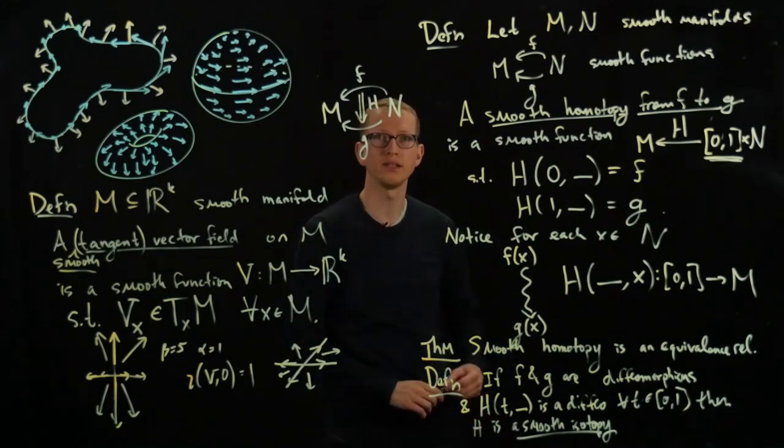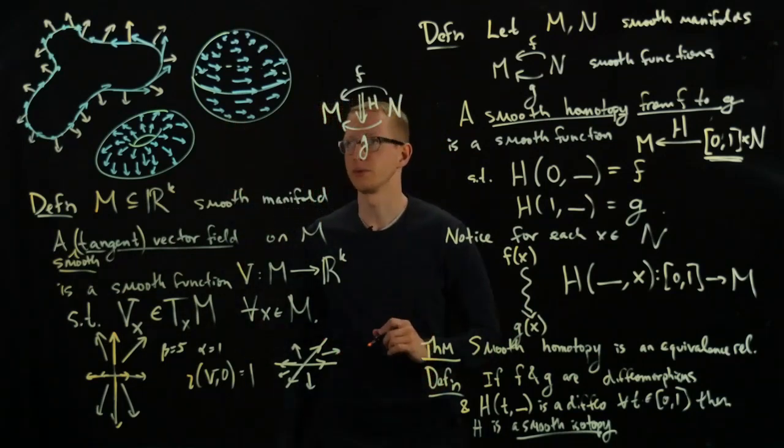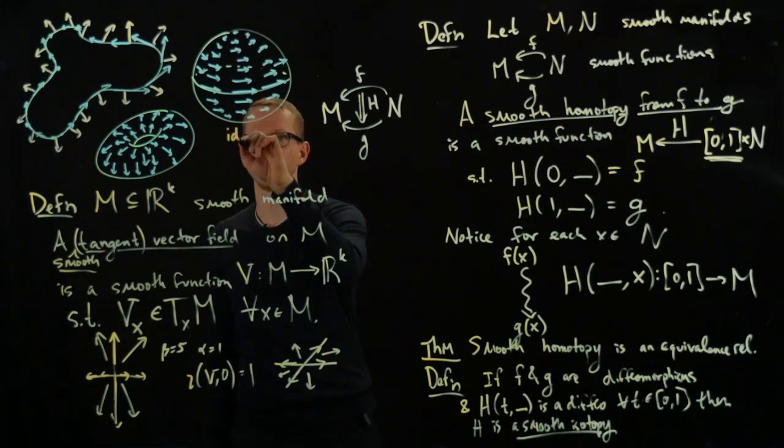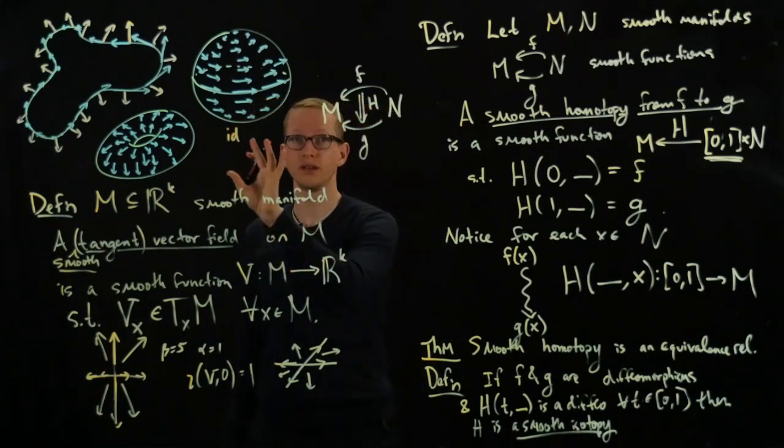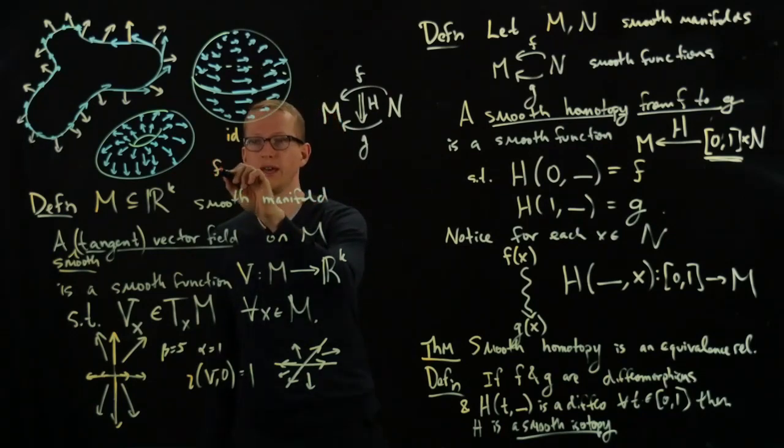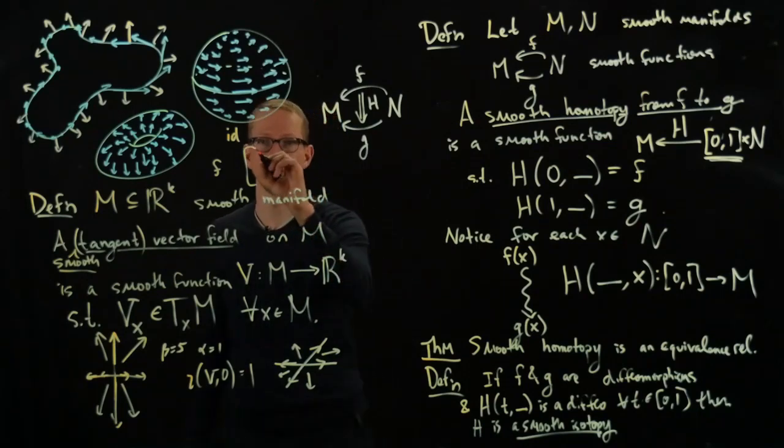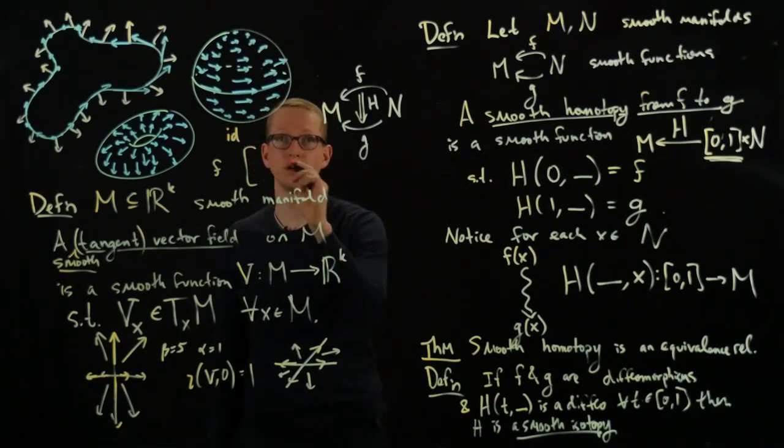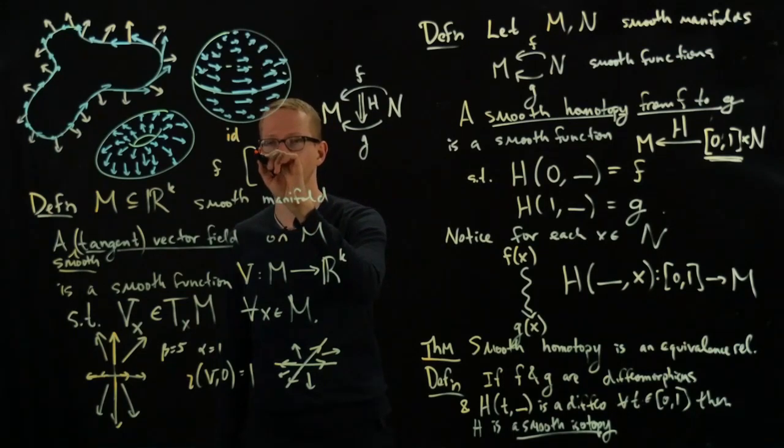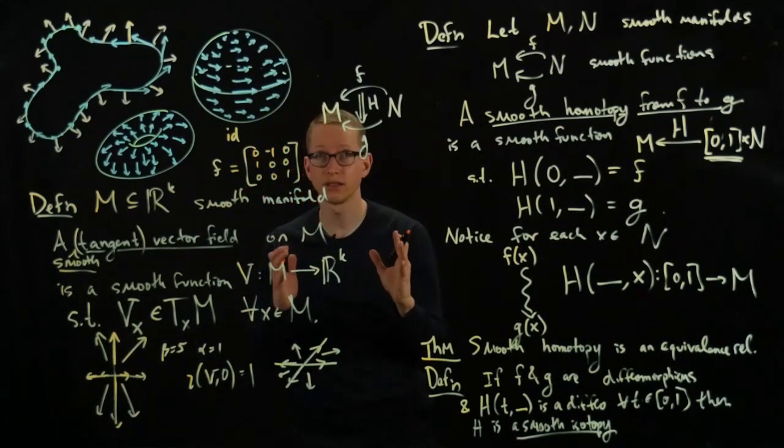And we should give at least one example of a smooth homotopy. So let's look at this sphere for instance right here and let's look at the identity function. On this sphere we sort of imagine that it's being rotated. Let's also compare this to the function f. Let's say f is given by rotation by let's say 90 degrees or something like that. So if it's 90 degrees rotation along the z-axis so then we get [0,-1; 1,0; 0,0; 1,0,0]. So let's say this is what f is and of course restricted to the sphere.